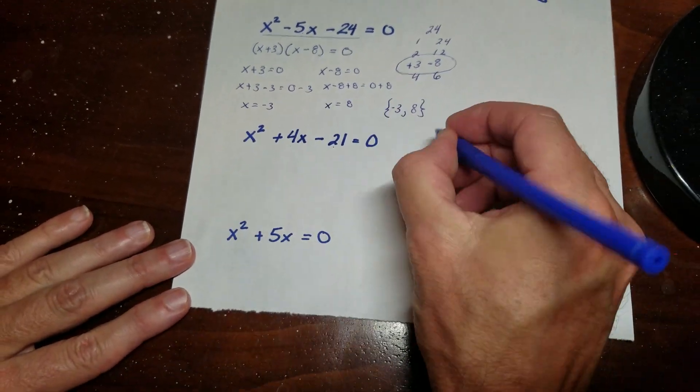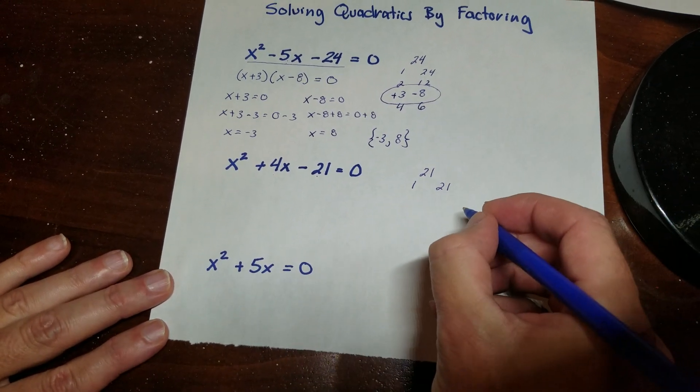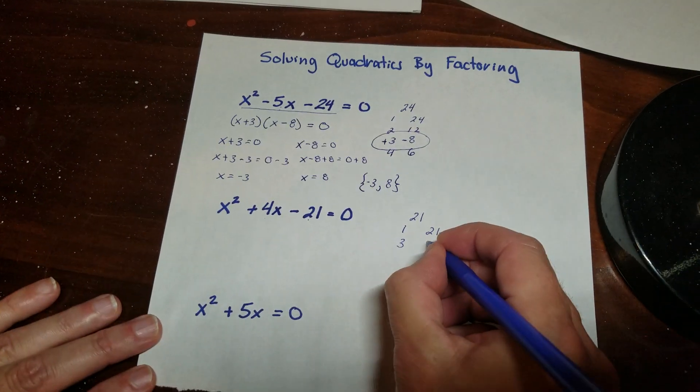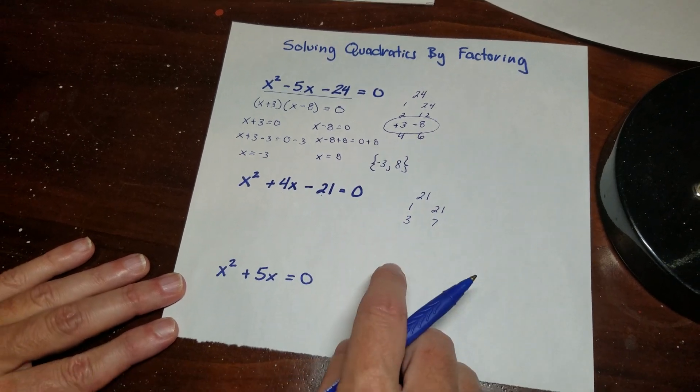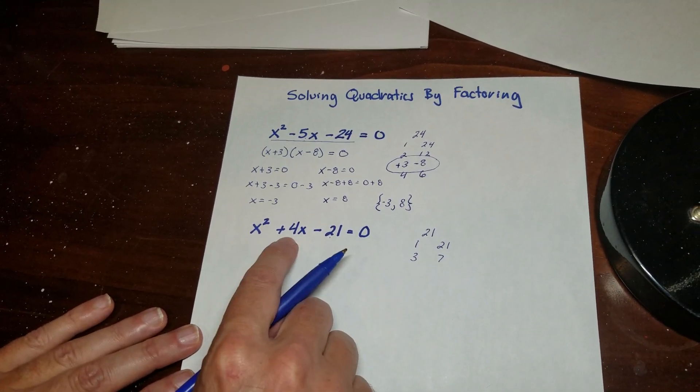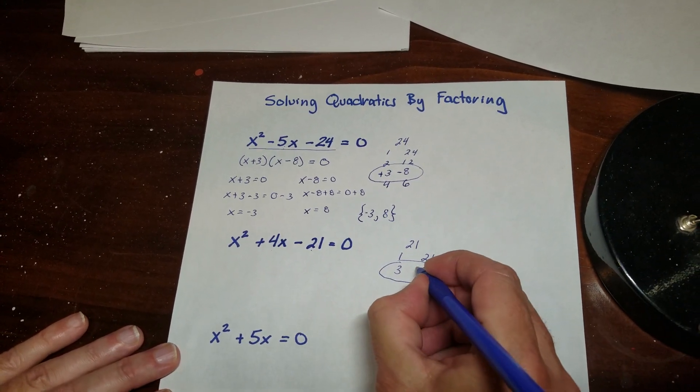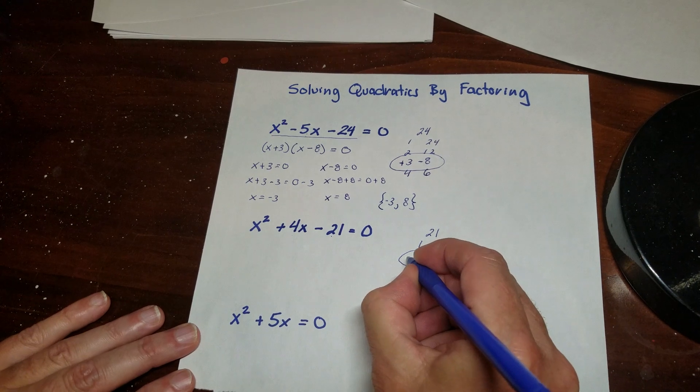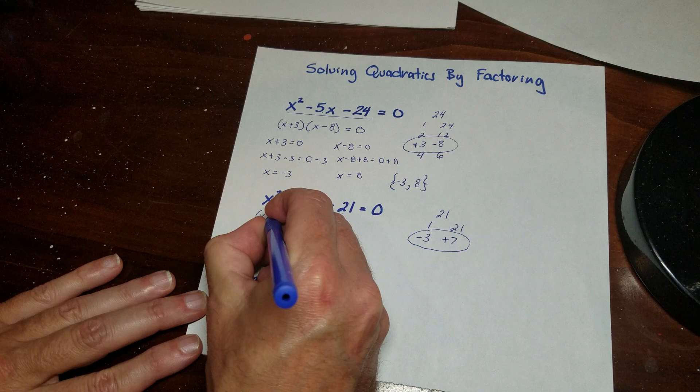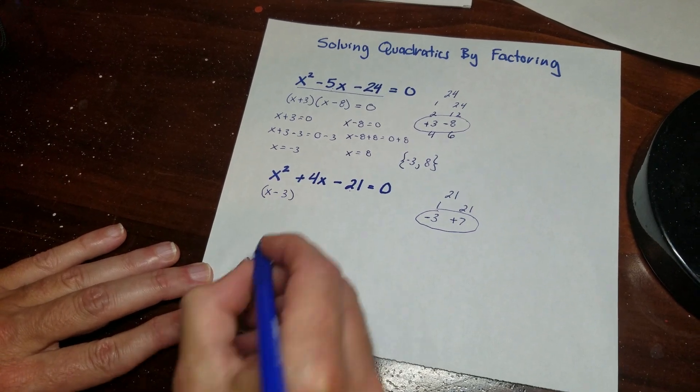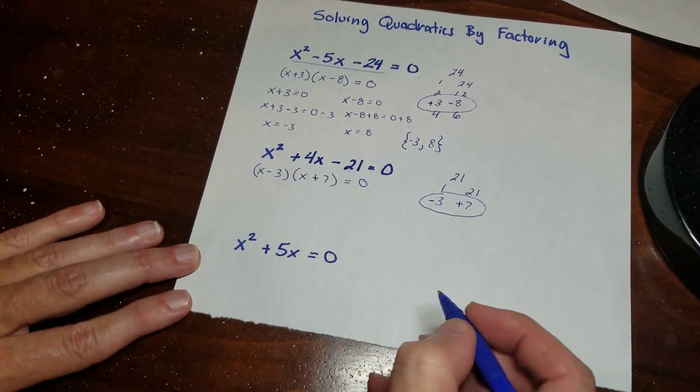So I'm going to start with the 21 and the factors of 21. So 1 and 21. 2 won't work. 3 will work with 7. 4 doesn't work. 5 doesn't work. 6 doesn't work. So now I'm at 7. So I know this is it. So I have to find a pair that's going to equal my 4. So what I'm going to do is I'm going to pick 7 and 3. So that must be a positive 7 and a negative 3. So I'm going to write my two binomials out. x minus 3 times x plus 7 is equal to 0. And then I make two little equations.